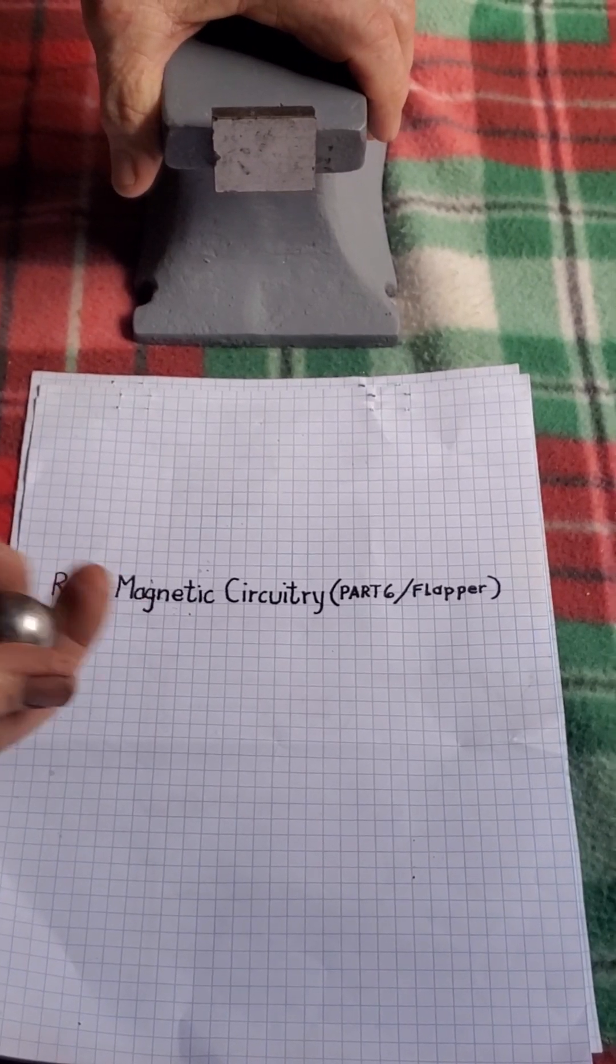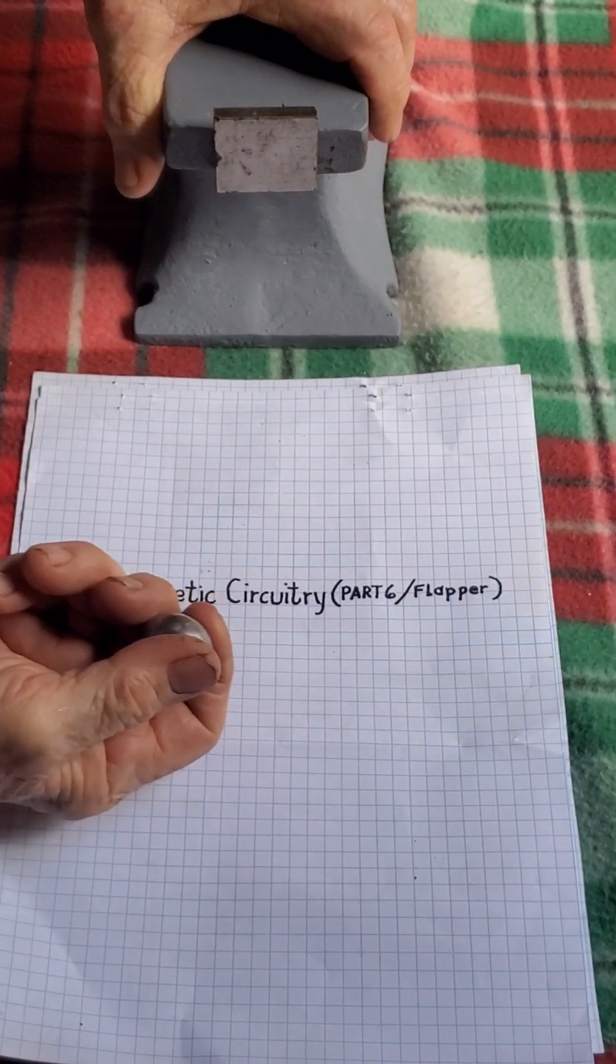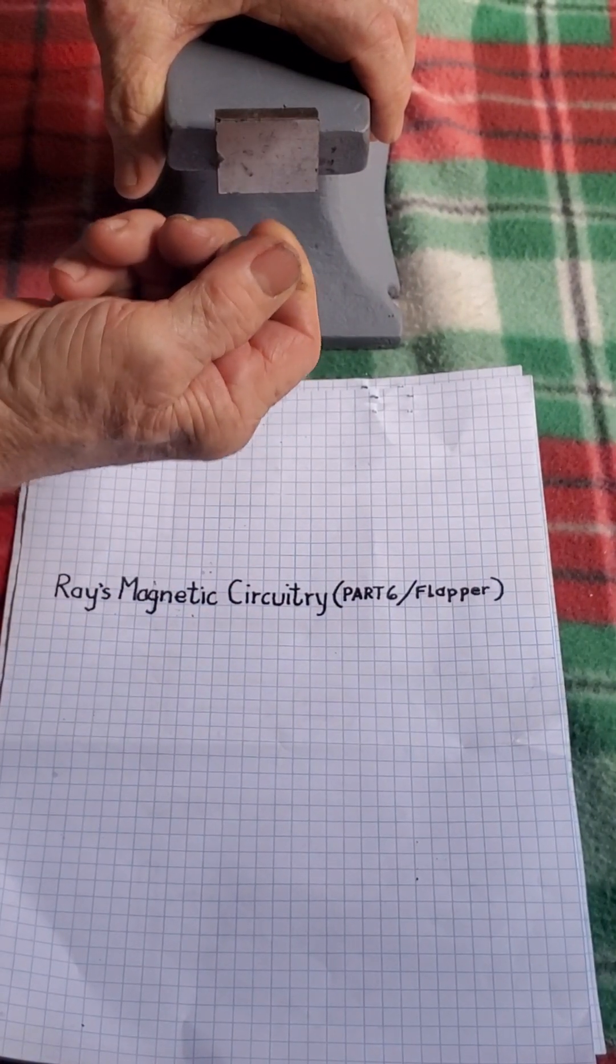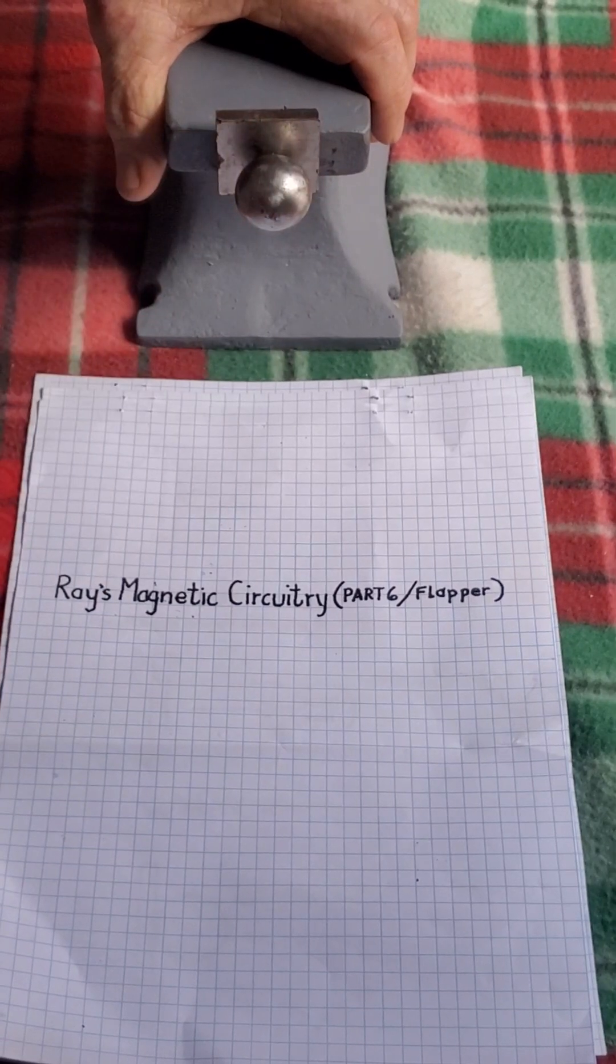If I take a bearing, an iron bearing, and bring it close to that magnet, there's an attraction.